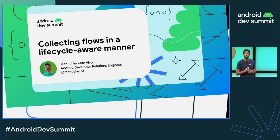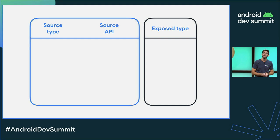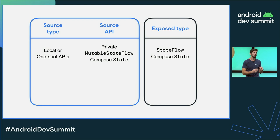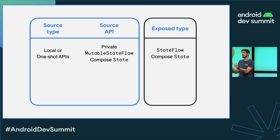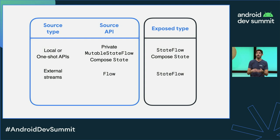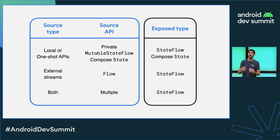Depending on the inputs to build our UI state: for a local source of state change or one-shot APIs, model it internally in the ViewModel as a private MutableStateFlow or Compose state, and expose it as a StateFlow or Compose state. For an external stream modeled as a Flow, expose it as a StateFlow using the stateIn operator. If you have both — at least one external stream — combine them and expose as a StateFlow, likely using stateIn again.